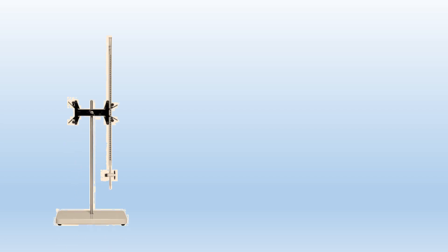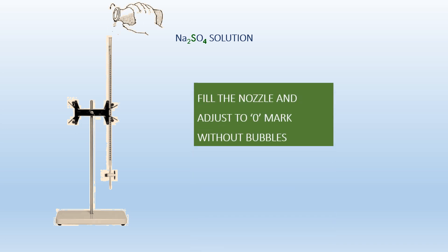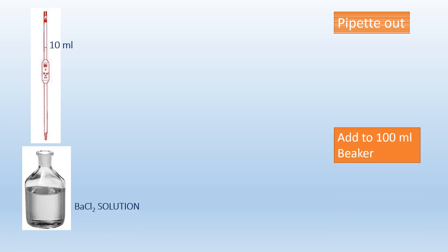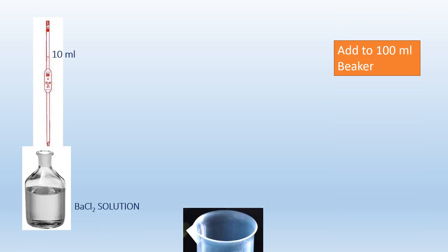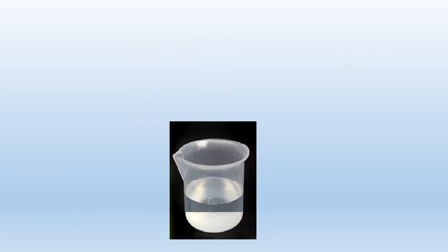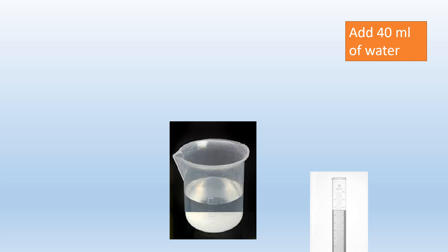Now let us start the experiment. Fill the burette with sodium sulphate solution. Take care that the nozzle is filled, there is no bubble, and you have adjusted to the zero mark. Pipette out 10 ml of barium chloride solution and add it to a beaker, then add 40 ml of water.